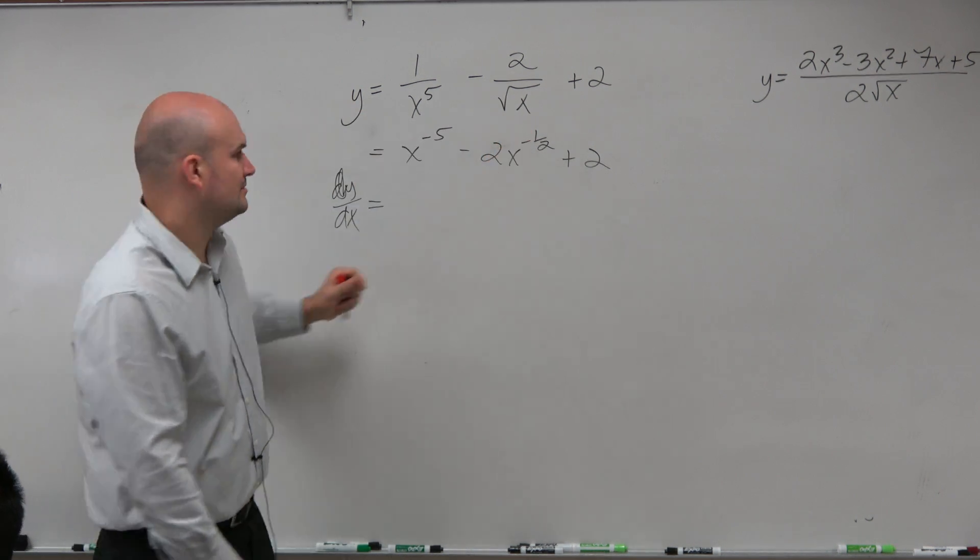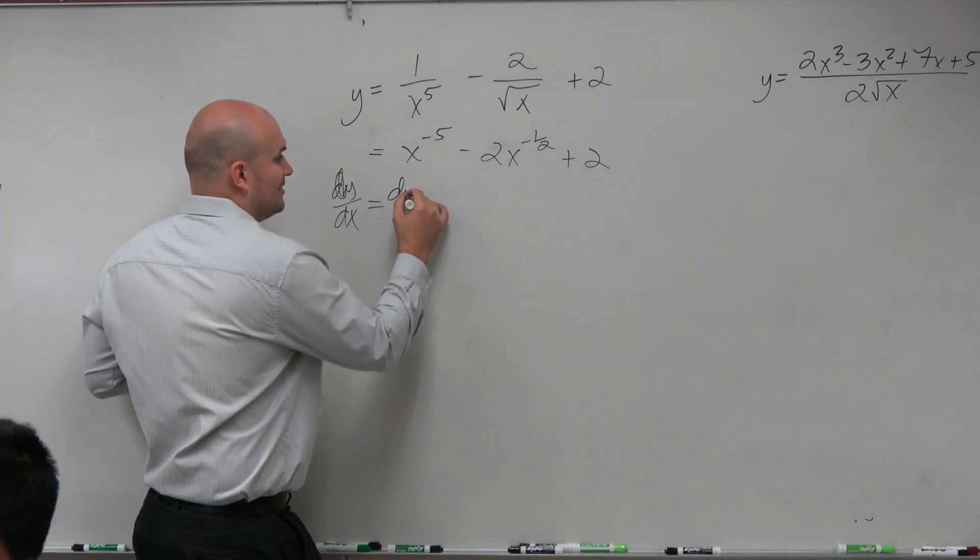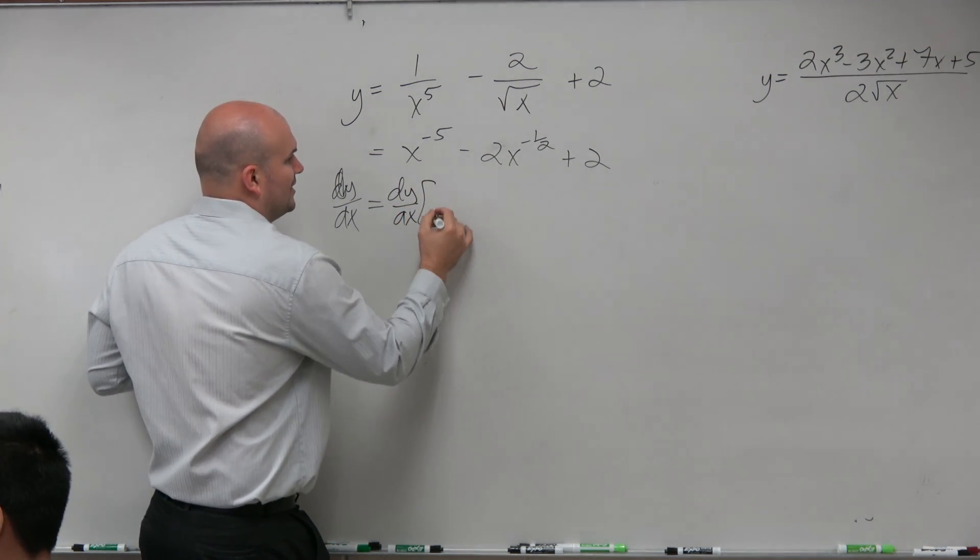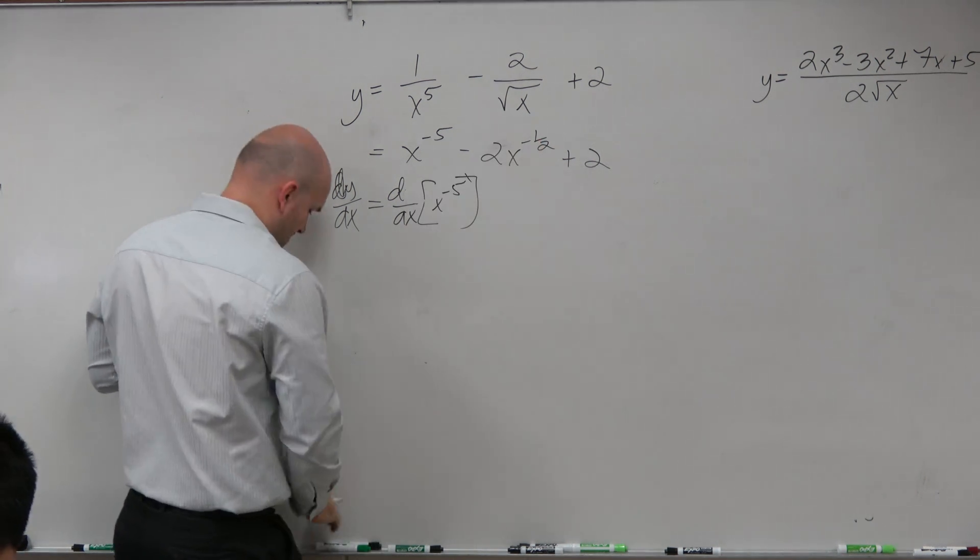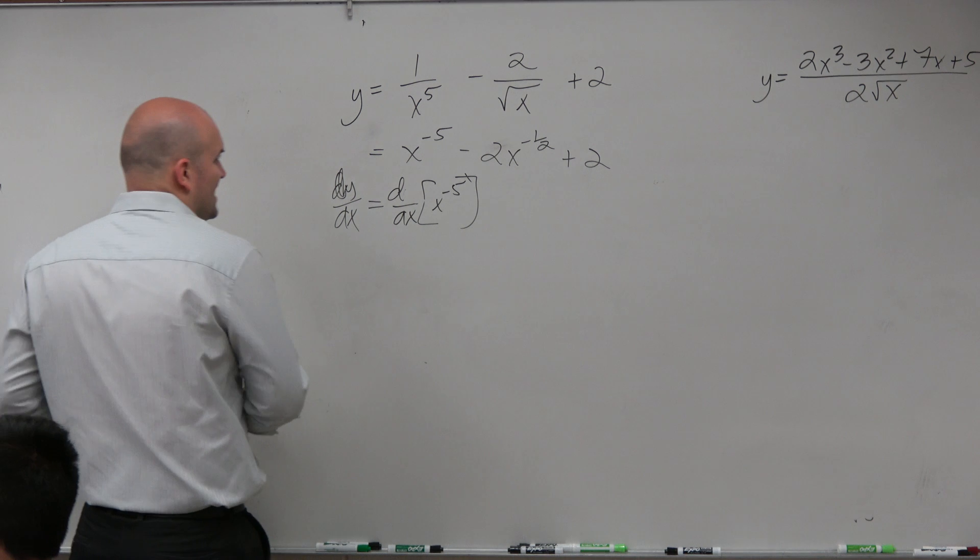Right? I mean, I could write DYDX of, you know, would actually be D over DX of X to the negative 5th, and then you'd do it for the other ones. It's just a little bit arduous task.